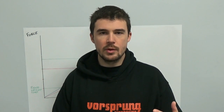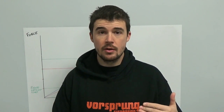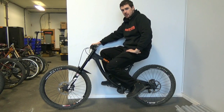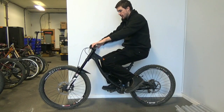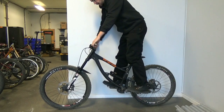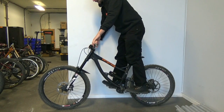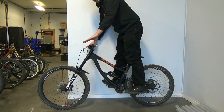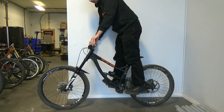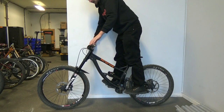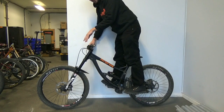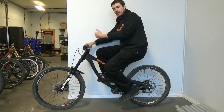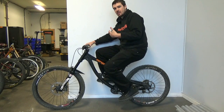My preferred method of body positioning when setting sag is to make sure that all your body weight is directly over the bottom bracket. The way that's done is by leaning the bike against a wall, standing on the pedals, releasing as much pressure as you can from the handlebars, making sure you're not pushing on the chain, staying off the brakes, and then giving a little bounce to break the friction — front and rear if necessary. From there, we can make sure our weight is always spread evenly between the front and rear wheels.